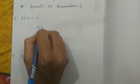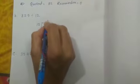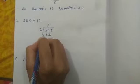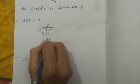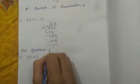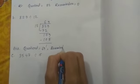Problem B: 829 divided by 6. Working: 1, 12. The quotient is equal to 69, remainder equal to 1.